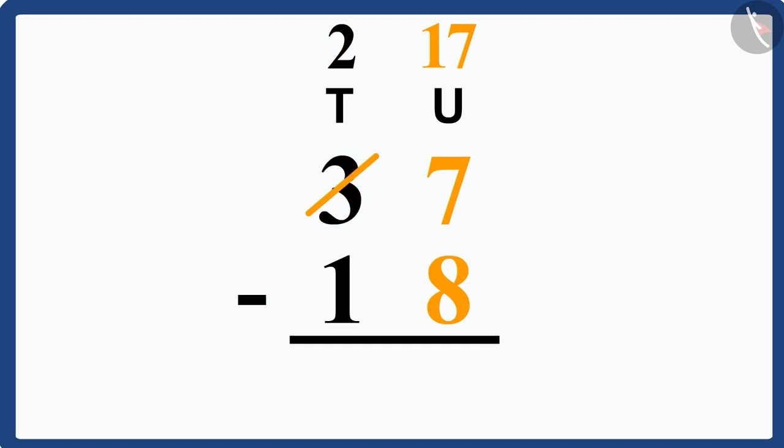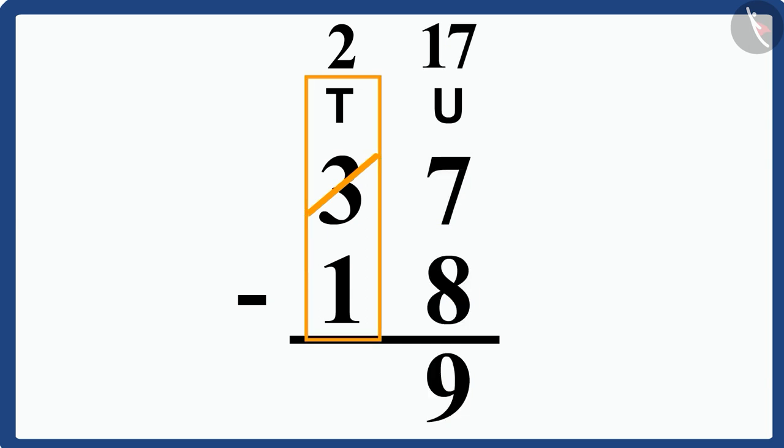Now, if we subtract 8 from 17, we get 9. We write it here in the unit's place like this. Let us now subtract the numbers in the tens place. 2 minus 1 becomes 1. Write this below the tens place.